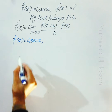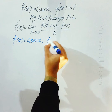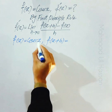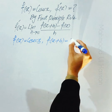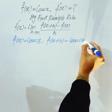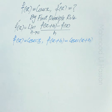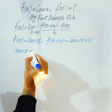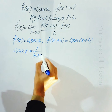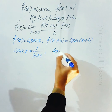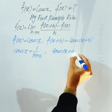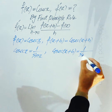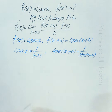اگر آپ x کی جگہ x+h replace کر دیں تو f(x+h) = cosecant(x+h) بن جائے گا۔ cosecant اور sine آپس میں reciprocals ہیں، so cosecant(x) = 1/sine(x) اور cosecant(x+h) = 1/sine(x+h)۔ Is it clear?